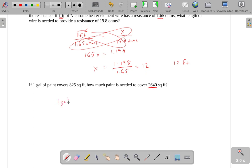So, let's see, one gallon of paint covers 825 square feet. We don't know the number of gallons that are needed, so I'll just put an X there. But we do know that we want to cover 2,640 square feet.